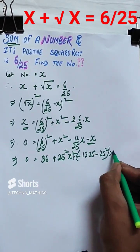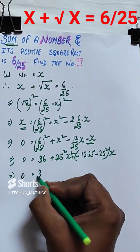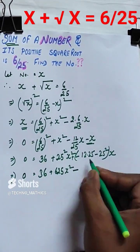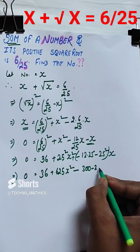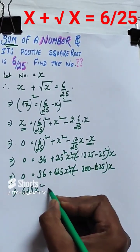Now we use the splitting the middle term concept. So minus 925 is split into two terms, minus 900 and minus 25.